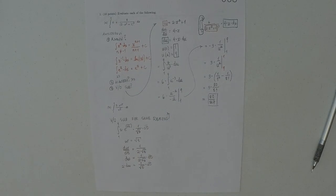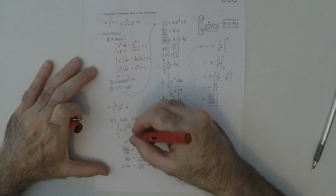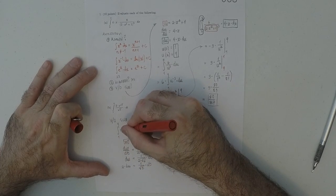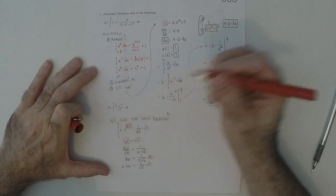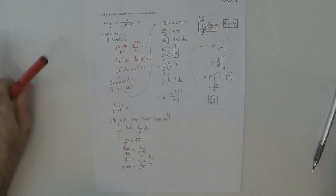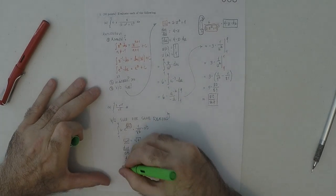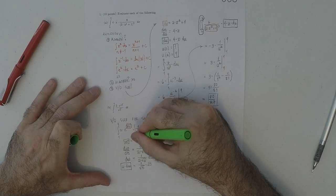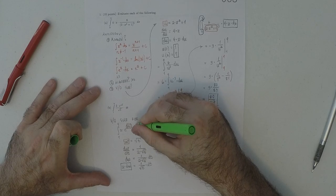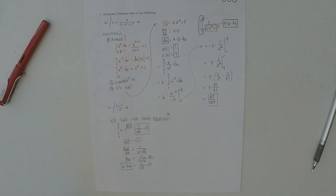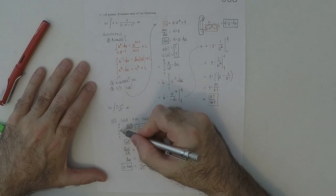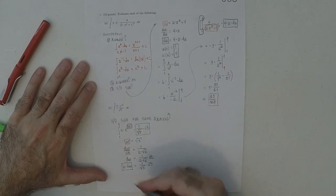So, what we're saying so far is that this w will replace that. This 2 dw will replace that. The 2 is just fine. It doesn't need to be replaced. But these limits are in terms of t. So, I'm gonna change them to w.